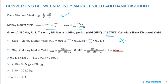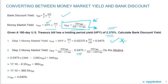Step one is to calculate the money market yield — given the holding period yield, just plug it in. Step two: memorize the formula and solve for the bank discount yield. Set it up as 0.0475 equals 360 × RBD over (360 minus T times the bank discount yield). Going through the algebra step by step confirms the correct answer is A.